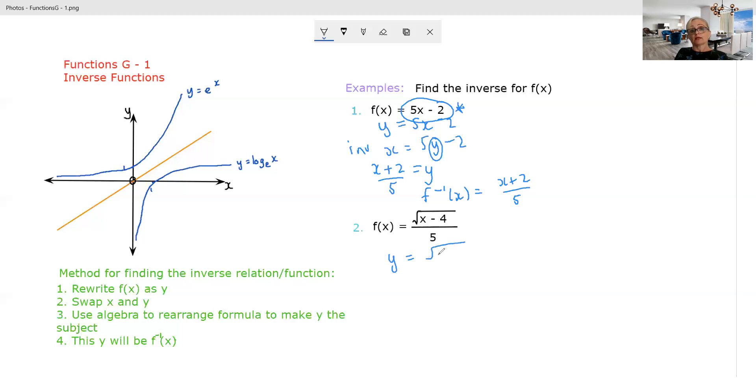So y equals square root of x minus 4 on 5. So for the inverse, we're going to swap. What are we going to do? We'll obviously multiply by 5, square both sides and add your 4. And so this will be our f inverse. So it's interesting. The inverse here is what you'd call a normal parabola. All right? 25x squared plus 4.